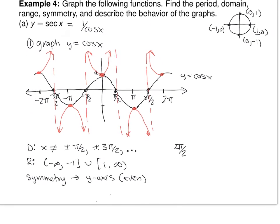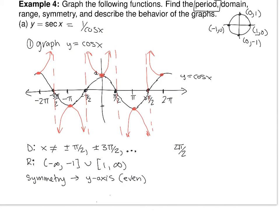On quizzes and tests I'll give you a specific interval to graph on, or say something like two cycles. The end behavior question from the textbook is strange here because there really isn't any clear end behavior — the function goes to infinity, then passes an asymptote and suddenly goes to negative infinity. So don't worry about describing end behavior for secant.